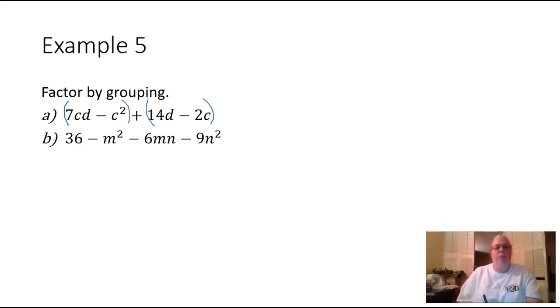So we look in the first parentheses and try to find out the GCF, the greatest common factor. It looks like both of these have a C and then nothing else in common. So when I take a C out of this, I have a 7 and a D left over and then the minus sign. And when I take a C away from this C squared, I have another C left over.